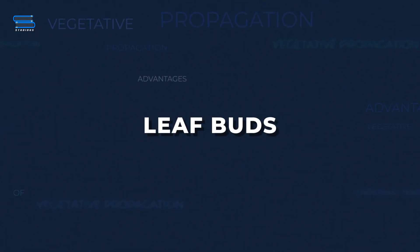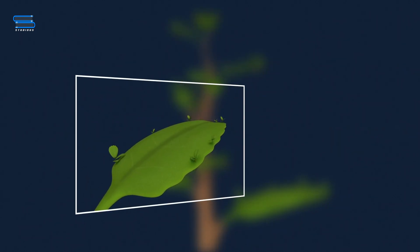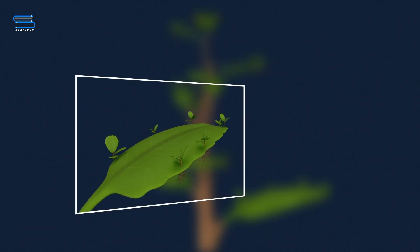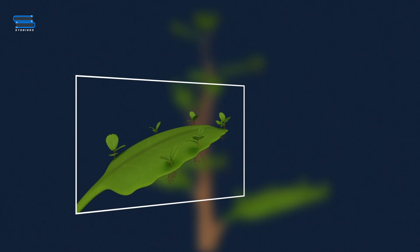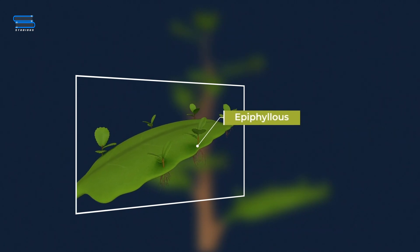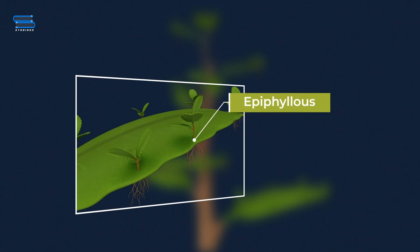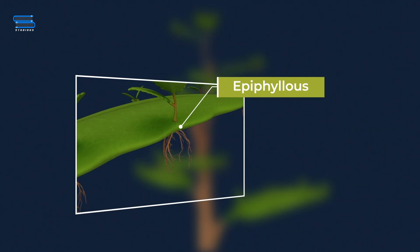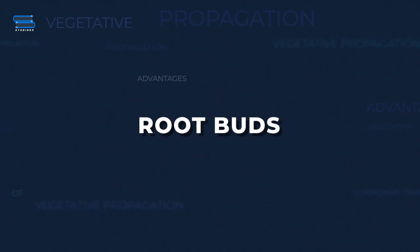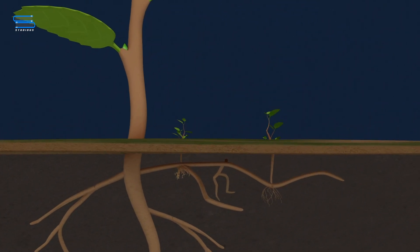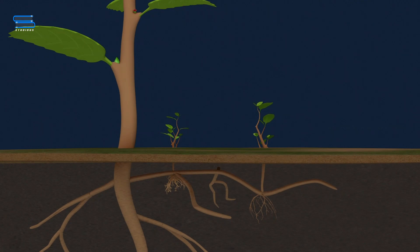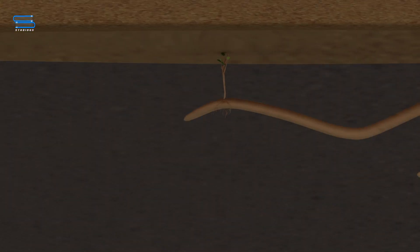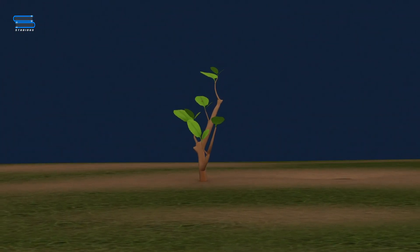Leaf buds: In Bryophyllum, buds are situated in the depressions of leaf margins. The usual position of buds is either at the terminal part of the shoot or in the axil of the leaf. These buds in Bryophyllum are known as adventitious buds. Root buds: In curry leaf plant and neem, young plants develop from the buds present on the root and develop into independent plants.